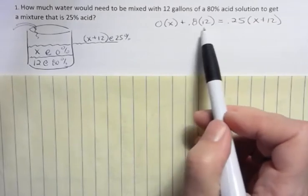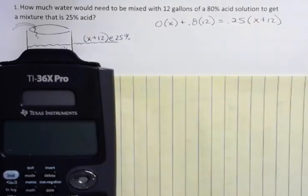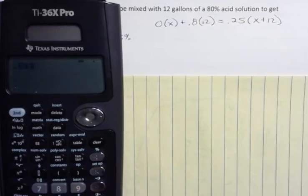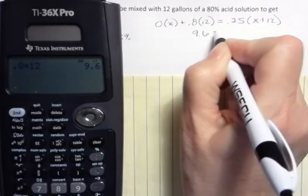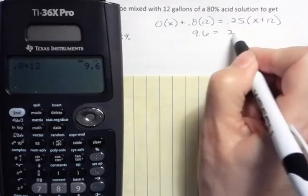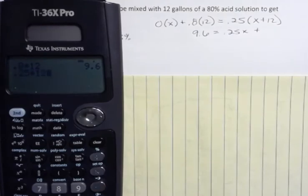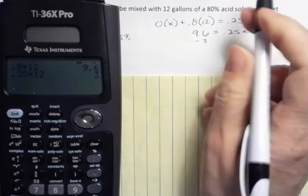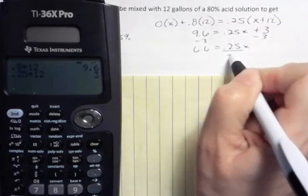So we're going to take 12 times 8 is 9.6. If you're not sure, then use your calculator. So 0.8 times 12 is 9.6. So there's 9.6. And then we have 0.25X. And then 0.25 times 12 is 3. I'm going to subtract 3 from both sides and get 6.6 equals 0.25X.